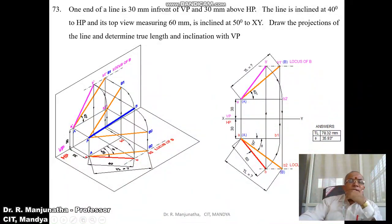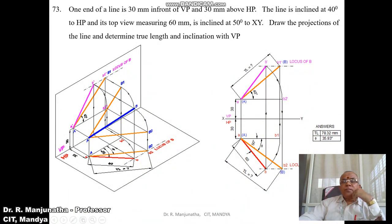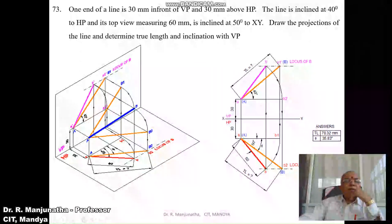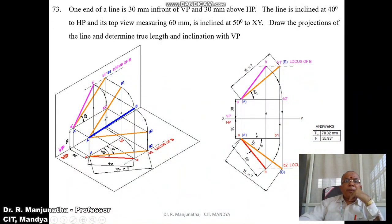One end of the line is 30 mm in front of VP and 30 mm above HP. The line is inclined at 40 degrees to HP and its top view measuring 60 mm is inclined at 50 degrees to the XY line. Draw the projections of the line and determine the true length and inclination with VP.